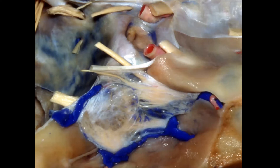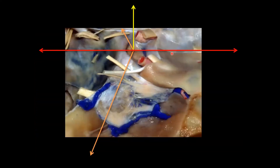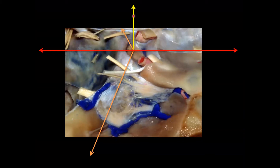Before we move on, let's orient ourselves with this image. This direction is anterior, going towards the nose. This is posterior, going towards the back of the head — the occiput. This is our midline, and right in the midline we have the pituitary gland — true midline skull base. As we move in this direction, we're moving lateral towards the ear. Up here is superior and down would be inferior.